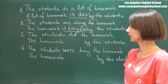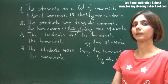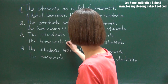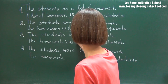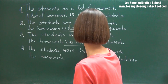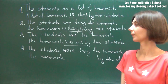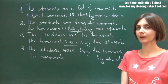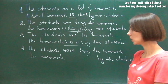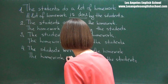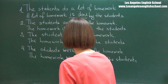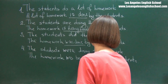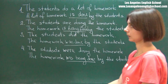The students did the homework. In the passive, it will be: the homework was done by the students. The students were doing the homework. In the passive, it will be: the homework was being done by the students.